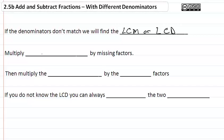We multiply denominators by missing factors. Once we have the denominators multiplied by the missing factor, we're going to multiply the numerator by the same factors.